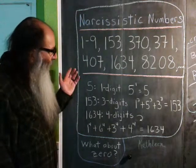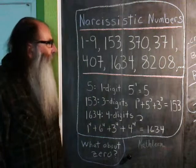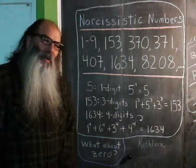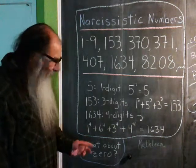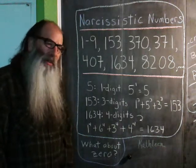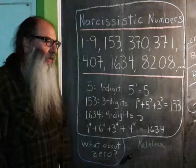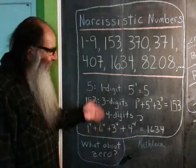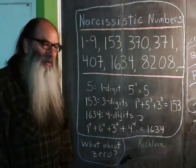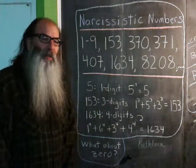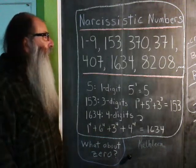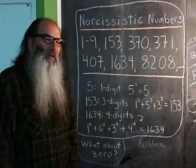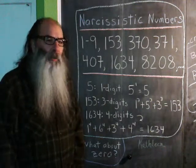I just want to say something about the number 0. I don't know why 0 is not a Narcissistic number, because 0 consists of 1 digit and 0 raised to the first power is 0. So according to this definition, it appears to me that 0 should be categorized as a Narcissistic number, but the sequence defined at the OEIS does not include 0. So I don't know what that's all about.